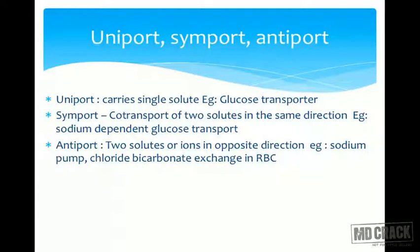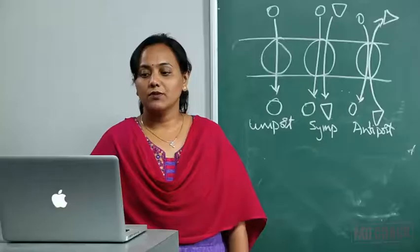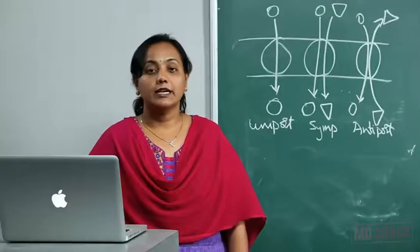Examples: uniport — glucose transporter. Symport — co-transport of two solutes in the same direction, like sodium-dependent glucose transport. Antiport — two solutes or ions in opposite directions, for example the sodium pump, or chloride-bicarbonate exchange in red blood cells.